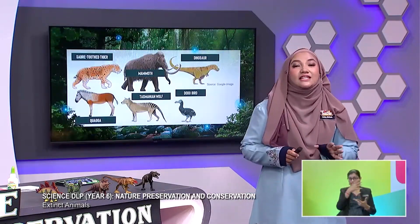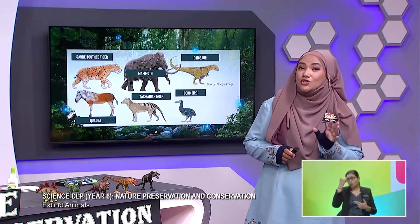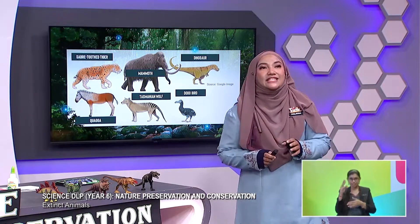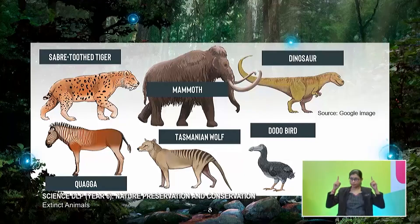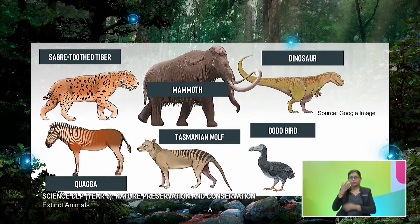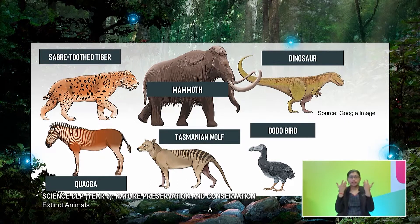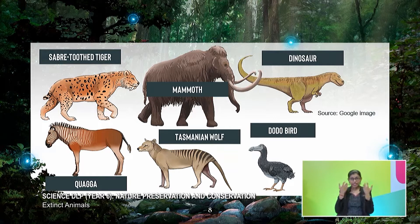These are the six animals that you should know. The first one is the saber-toothed tiger. The difference between the saber-toothed tiger and the tigers we have now is that the saber-toothed tiger had really long canine teeth — really long and sharp.